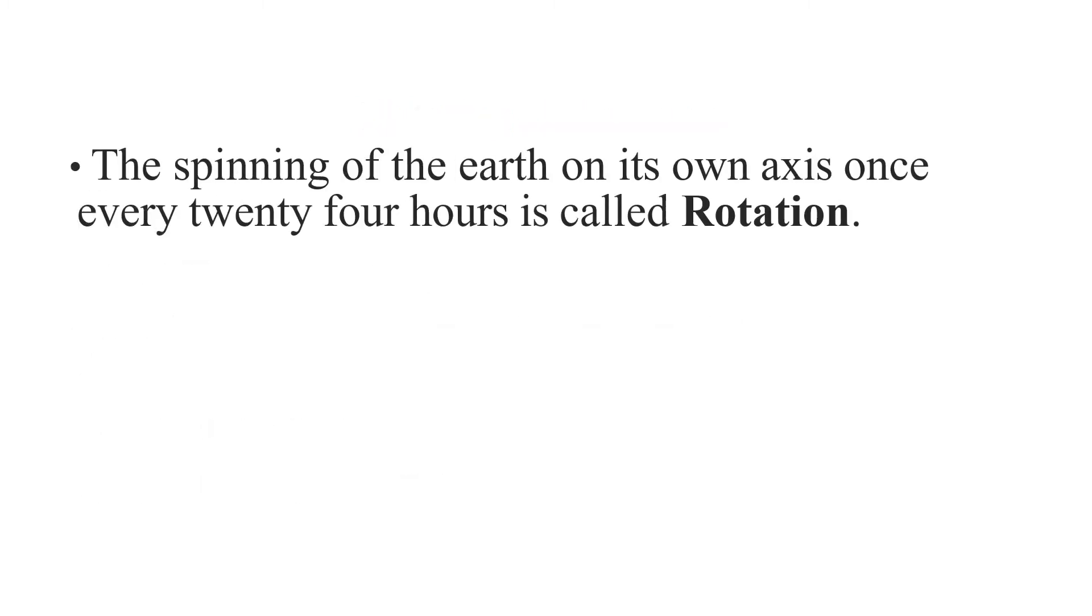So children, we can easily say that spinning of the Earth on its own axis once every 24 hours is called rotation. This causes day and night. Later, we will see how we get day and night.